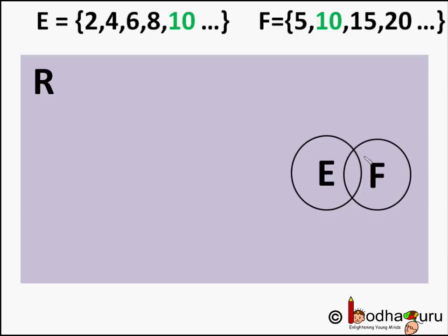So how do we represent these two sets? Let us have two circles, one representing set of even numbers E and other representing the set of multiples of 5 which is set F. They both are part of the universal set R, and we draw some overlapping part between the two circles.